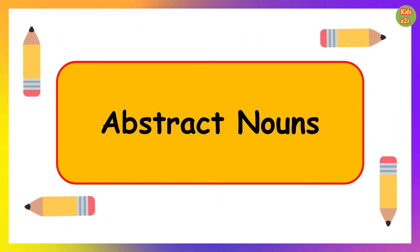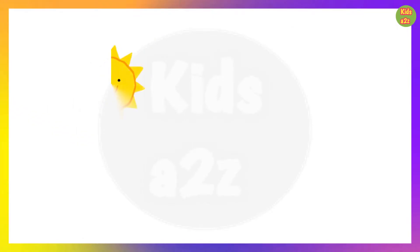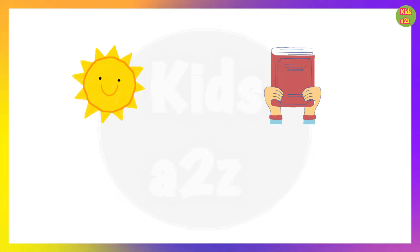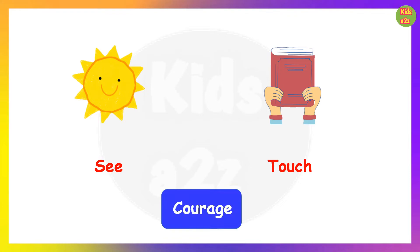Today, we are going to learn about abstract nouns. We can see the sun. We can touch a book. But can we see or touch courage? No, because it is the name of something that we can only think of.